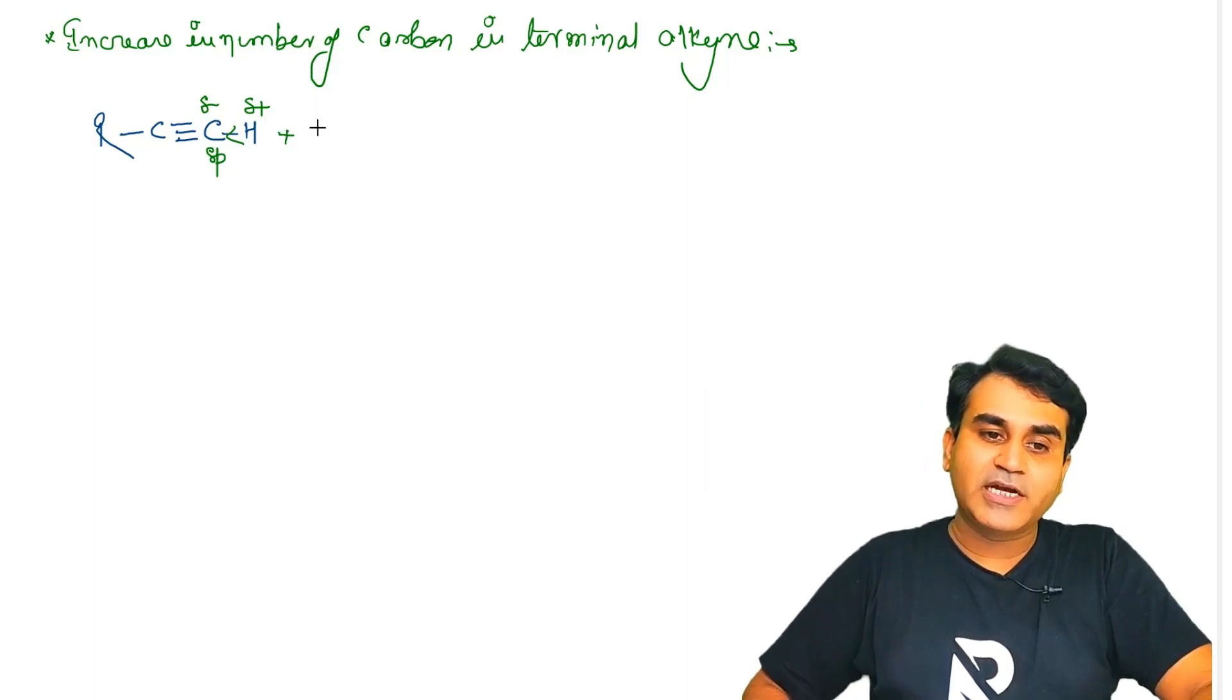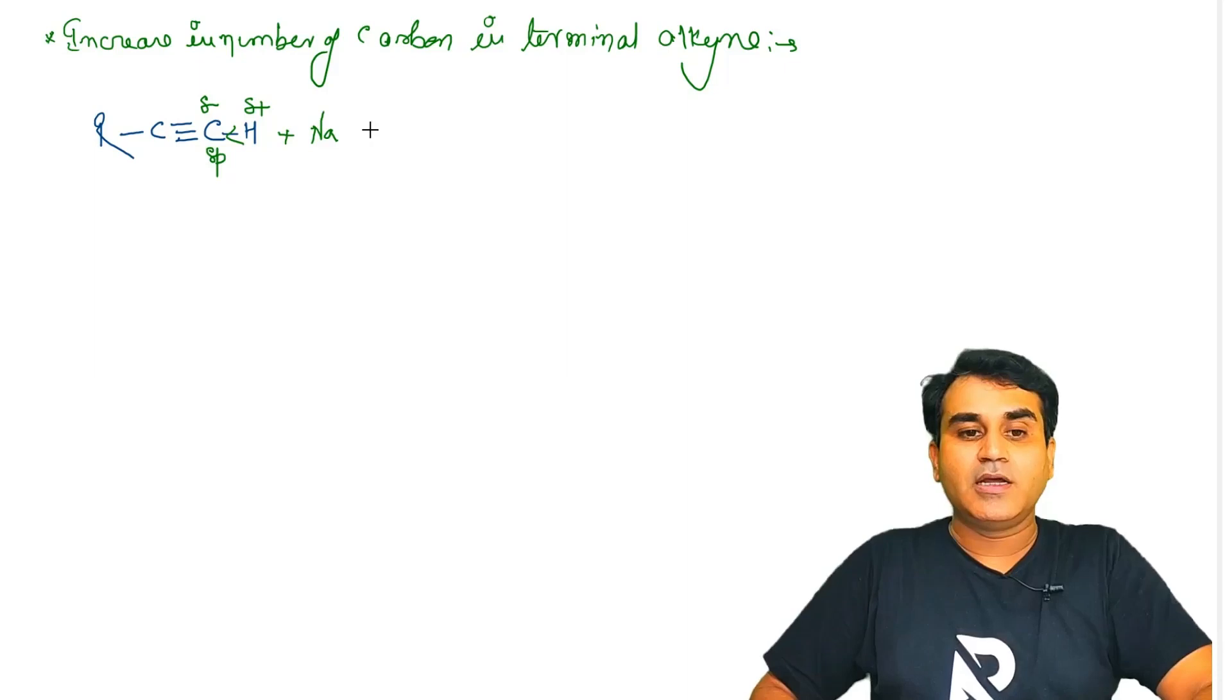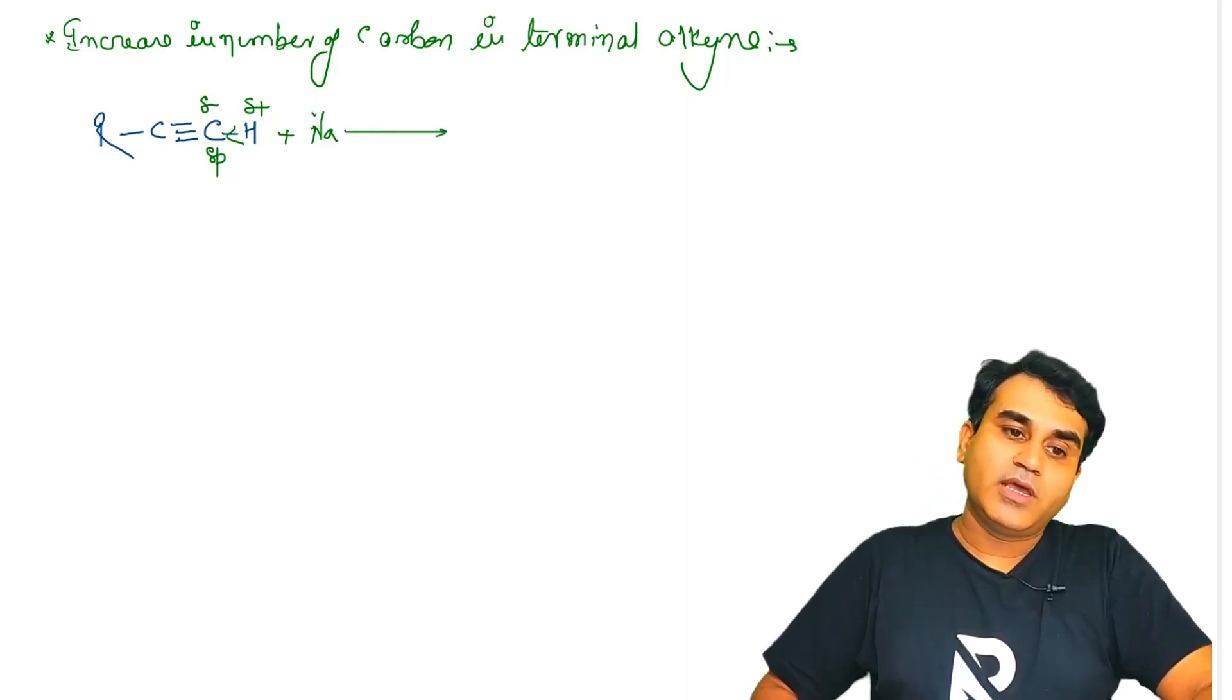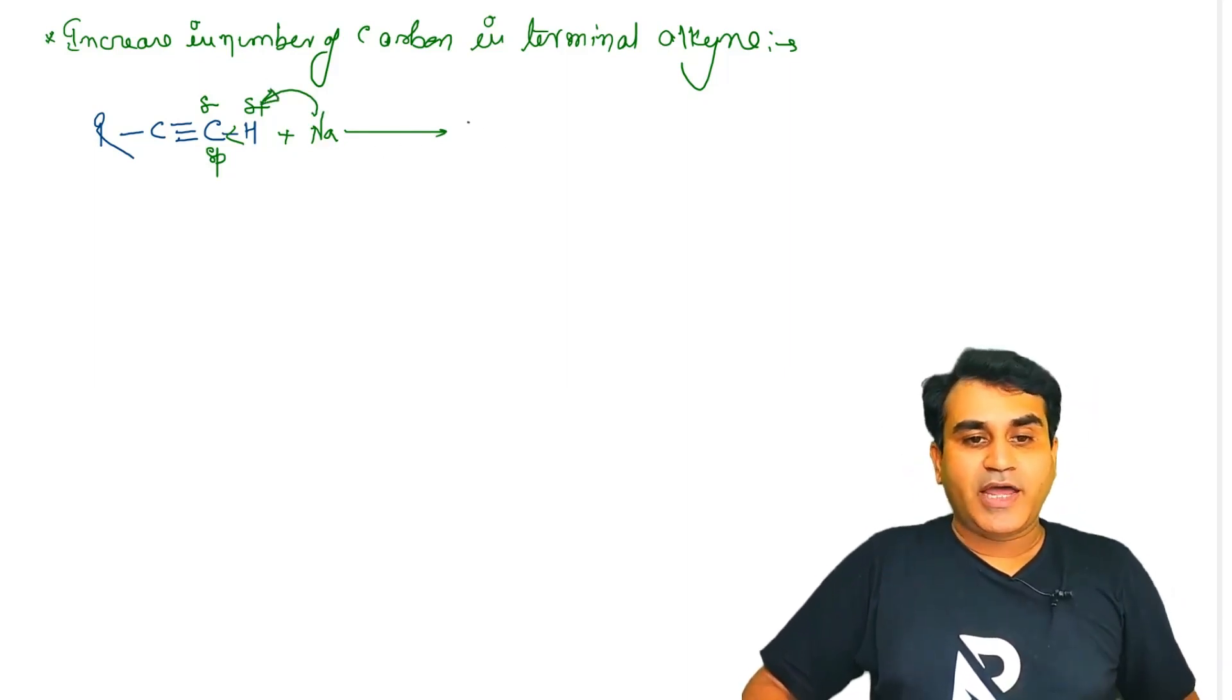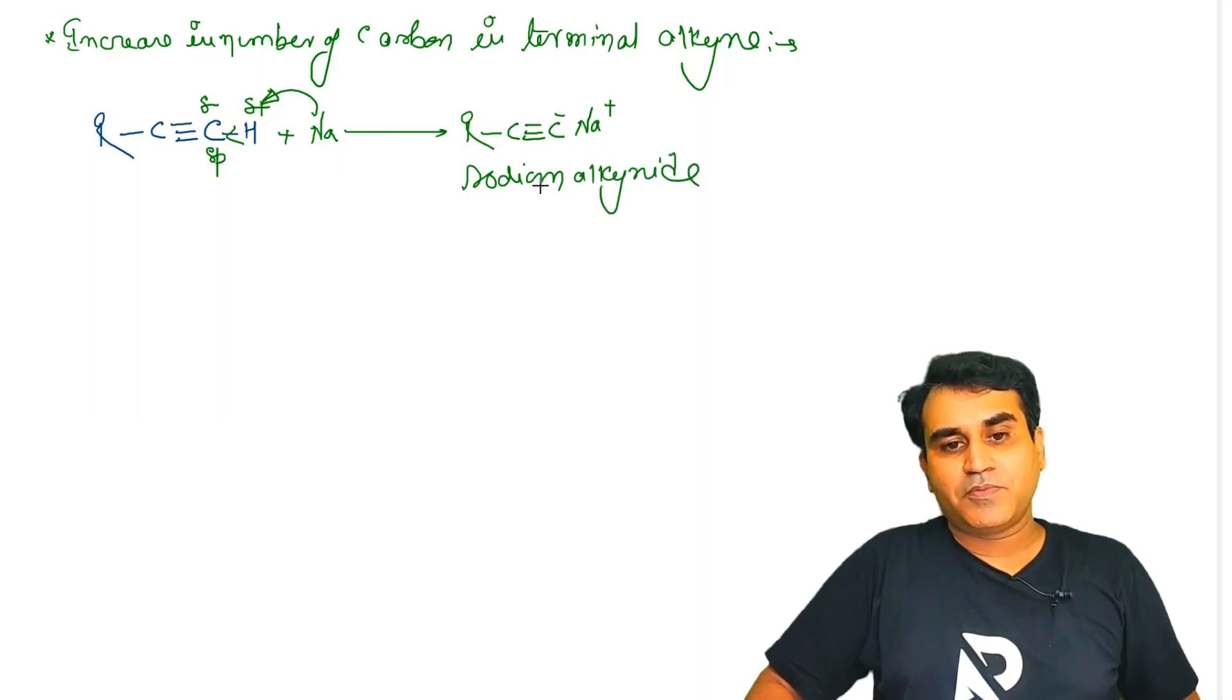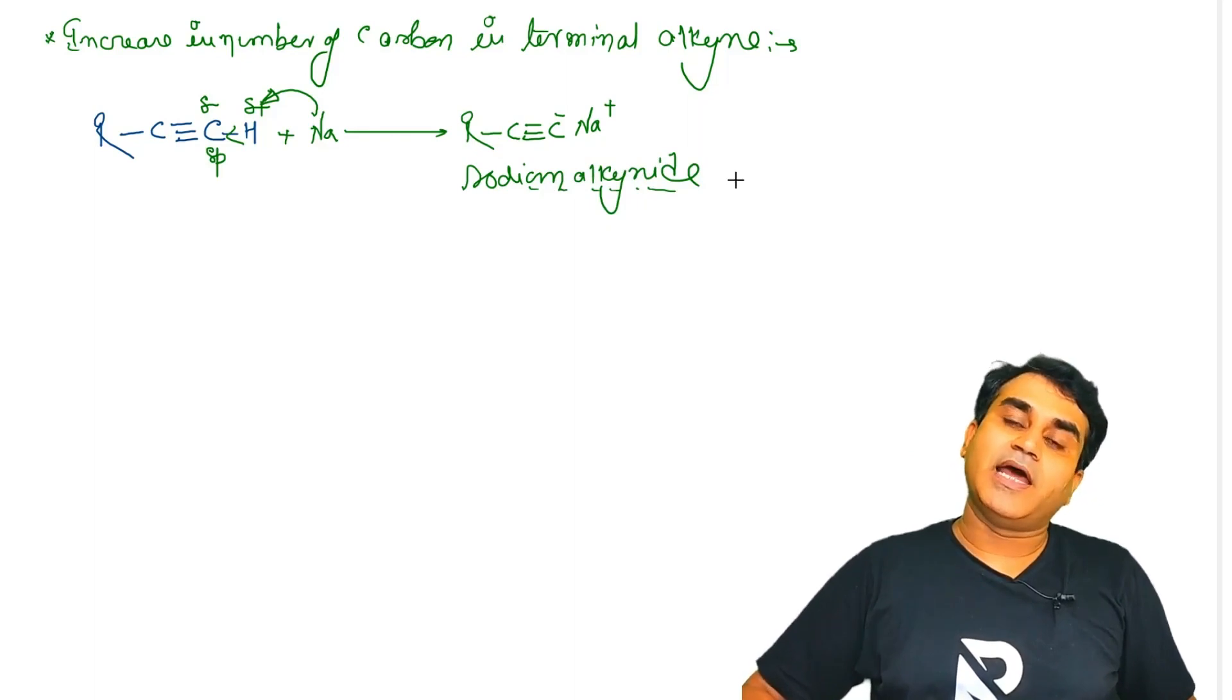Now we react it with sodium metal. When we react with sodium metal, this hydrogen will be replaced. Active metal ke saath reaction, R-C≡C⁻ Na⁺ product ban jayega. Sodium alkyneide product ban gaya.